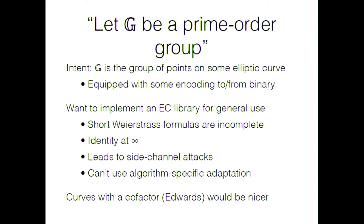The phrase 'let G be a prime order group' is surely familiar to members of the audience here. This is a common requirement of the group in crypto papers, and oftentimes the intention is that G is the group of points on some elliptic curve. If you were actually using this in a cryptosystem or protocol, you'll need some way to encode points on the curve to binary and probably also to read them back in so that you can communicate them to another party.